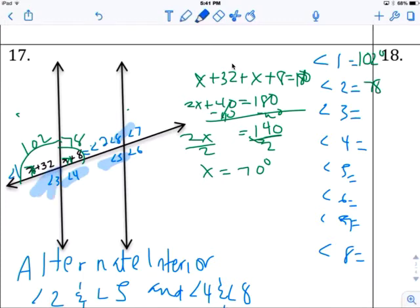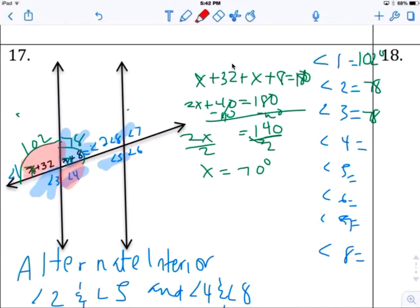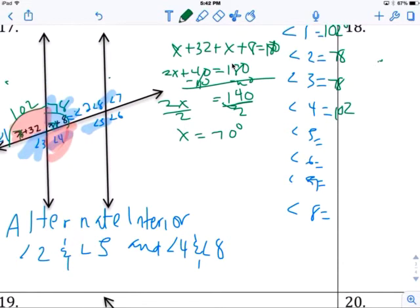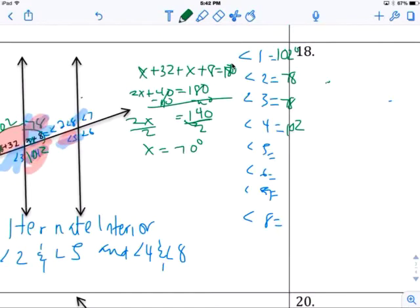And then angle one is 102 degrees. Angle two is 78. Angle three right here is vertical to 78. Angle four is right here somewhere congruent to this one which is 102. And 70 is 102 and 70 is 102, yep that's right and that makes 180. Okay, angle four is 102. Okay, vertical angle five is the same as 78. Angle six is 102, it's identical to that. Now eight is 102 also and seven is 78.